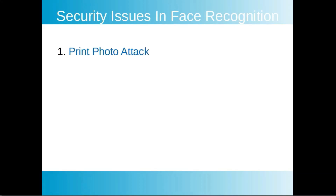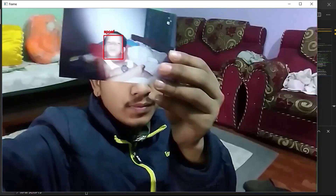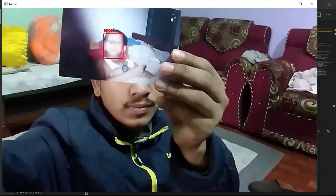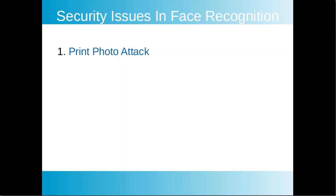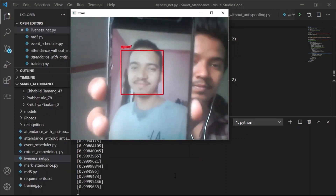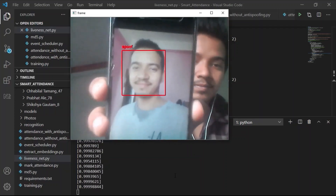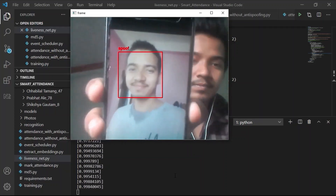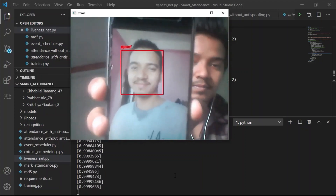The first issue in face recognition is the print photo attack. In a print photo attack, the attacker uses a printed photo of a person to attack the system. The next attack is the mobile photo attack, where the attacker uses a photo from their mobile device to gain access to the system.